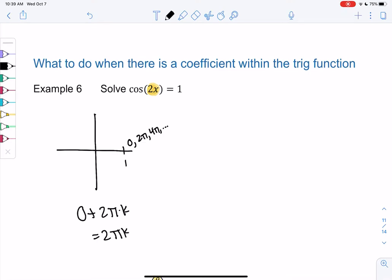The problem is this is equal to 2x, not x. So once we find that angle, we're going to put that whole inner function equal to the angle. And then we can just solve this using traditional algebra. Divide by 2, divide by 2. So x is equal to πk.